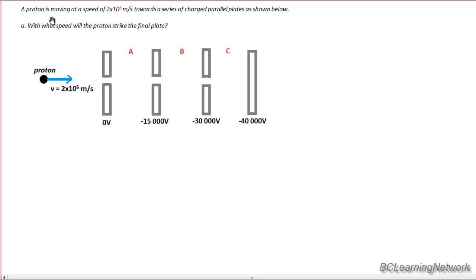Okay, so in this question we have a proton moving with an initial speed of 2 times 10 to the 6 meters per second, and it's moving towards these series of parallel plates. You can see the way they're drawn here.